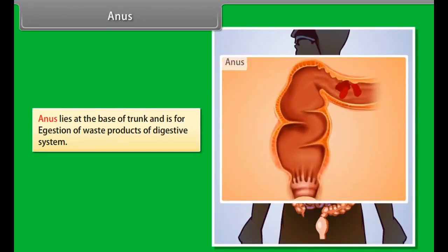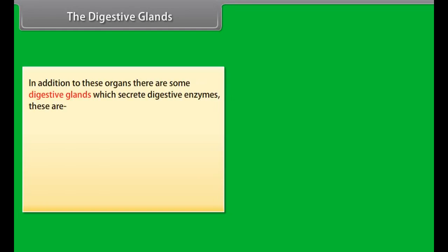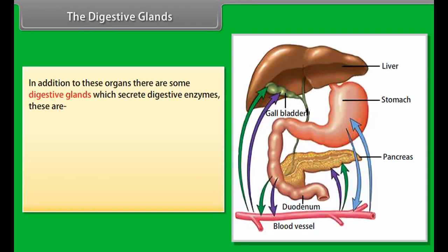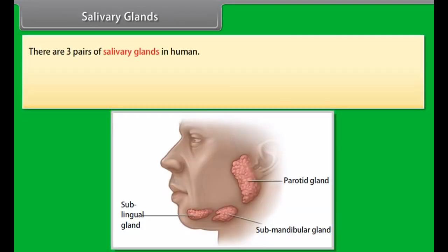The small intestine is the largest part of the alimentary canal, about 6.5 meters long in an adult, and is called 'small' because it is very narrow. It is divided into the duodenum, jejunum, and ileum. The small intestine is the site of complete digestion and absorption of food.